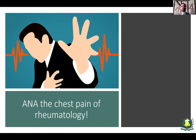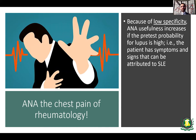As a rheumatologist, when somebody refers patients to me with just a positive ANA, it gives me concern, because when an ANA is done improperly it does not yield enough information — but when done in the proper setting, it's very useful. Because it has low specificity, the usefulness of an ANA increases if the pretest probability for lupus is high. For example, if somebody has symptoms and signs suggestive of systemic lupus erythematosus or a multisystem inflammatory disorder, when you order an ANA and it comes back positive, it's of very high value.